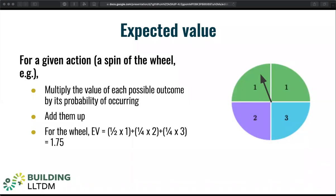One way to think about the risk involved in doing a particular thing — popular among economists and lawyers who wish they were economists — is to think about the expected value of taking that action. Multiply the magnitude of each outcome's goodness or badness, totally awesome or truly terrible, $100,000 profit or a $200,000 loss, by the likelihood of that outcome coming to pass. Is there a 20% chance this will happen or an 80% chance? The sum of the resulting numbers can give you a sense of the overall risk-reward for any course of action.